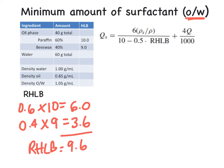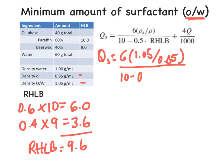Now we're ready to plug everything into our equation. So here our QS is going to be equal to 6 times the density of our mixture, the 1.05, divided by the density of our dispersed phase. So here it's the 0.85. That's going to be divided by 10 minus 0.5 times our RHLB, which we just calculated to be 9.6. And then we're going to add to this 4 times the percentage of the continuous phase. That's our water. So 60 divided by 1,000.